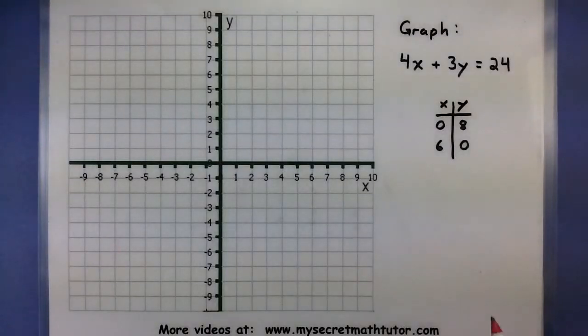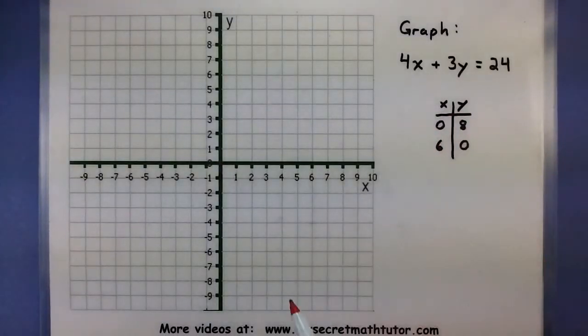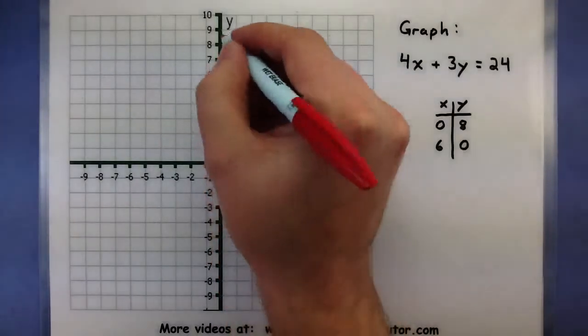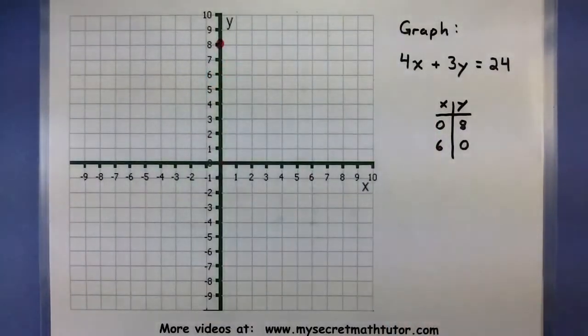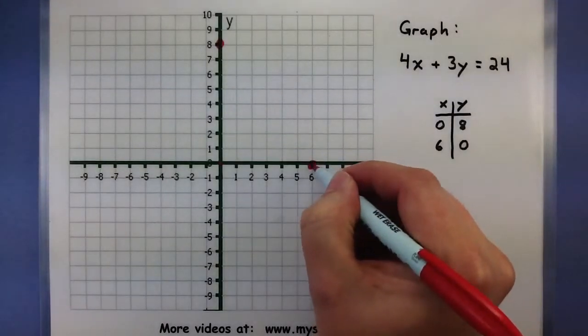Let's go ahead and plot these out. So the first point right here is at 0, 8. So x equals 0, y equals 8. I'll put a point way up here. And the next point, x equals 6 and y equals 0. That would put my point right there.